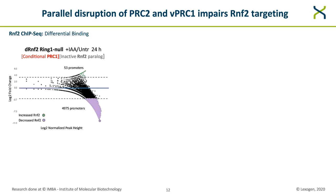We looked at the effects of auxin treatment on chromatin-bound RNF2 at promoter regions genome-wide, performing differential binding analysis on the RNF2 ChIP-seq data. On this MA plot, each dot represents one promoter. The y-axis shows the log-fold change between auxin-treated and untreated samples, while the x-axis shows the log-normalized peak height. Colors indicate statistically significant promoters that either gain signal in green or lose signal in purple. The auxin treatment leads to massive loss of RNF2 binding at nearly 5,000 promoters in the positive control cell line.